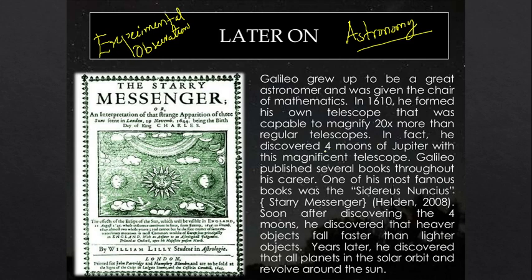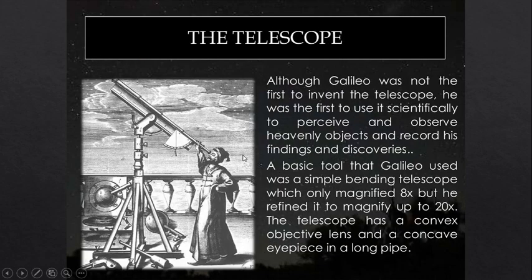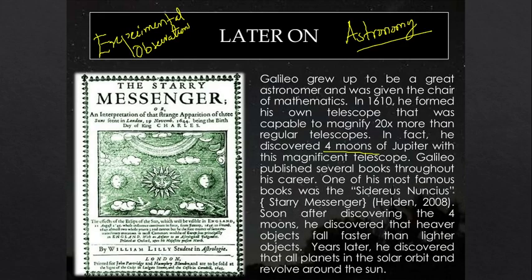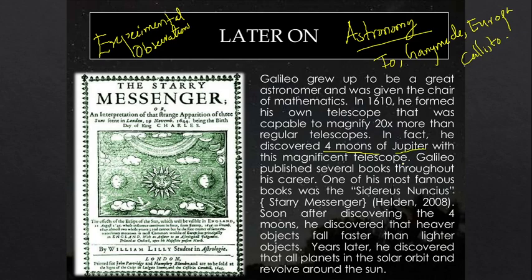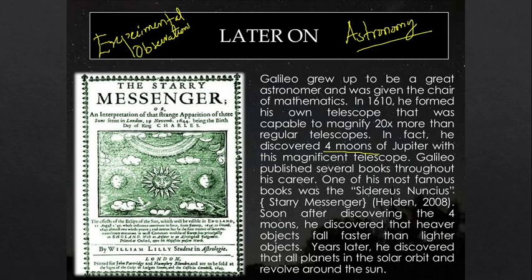He found that Jupiter had four moons, and these moons were actually orbiting Jupiter itself. Jupiter's moons are Io, Ganymede, Europa, and Callisto. Jupiter has other moons too, but these were visible then. He proposed that the heliocentric theory is actually true, based on the observation that the four moons of Jupiter are rotating around Jupiter and not around Earth. That was a strong point supporting the heliocentric theory.